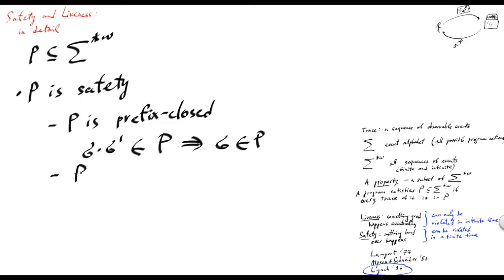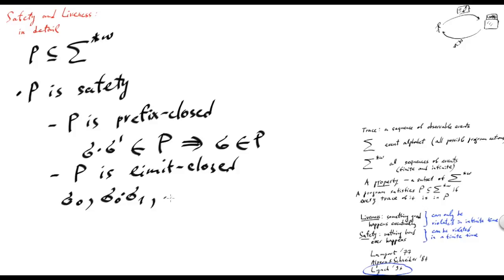And P is also limit-closed, meaning that for all sequences of the form sigma-0, one trace; sigma-0 extended to sigma-1, another trace; sigma-0 extended with sigma-1 extended with sigma-i; and so on — so we have an infinite sequence of ever-extended traces.